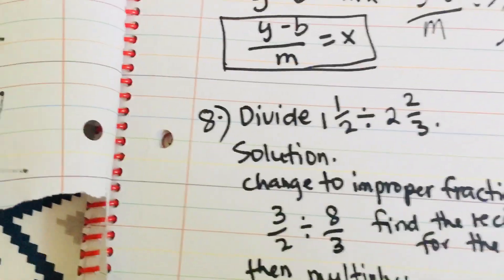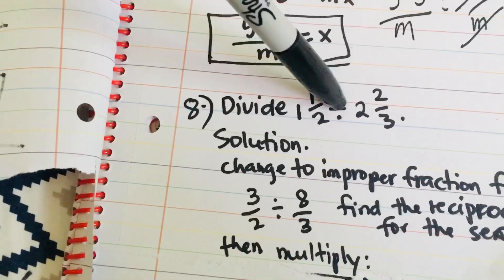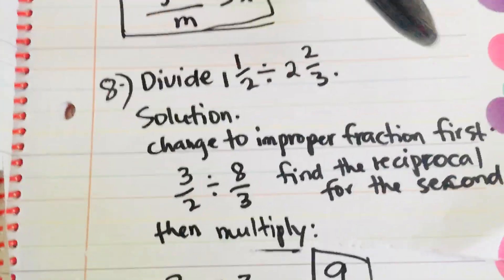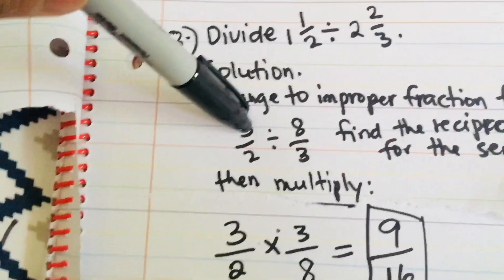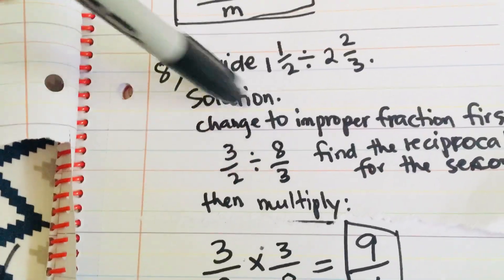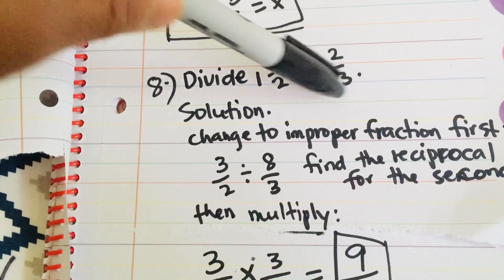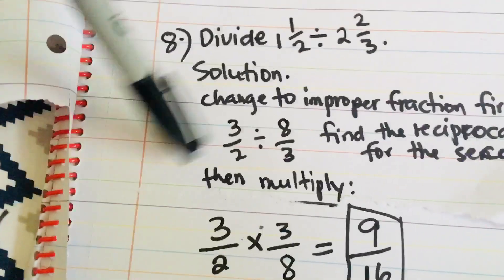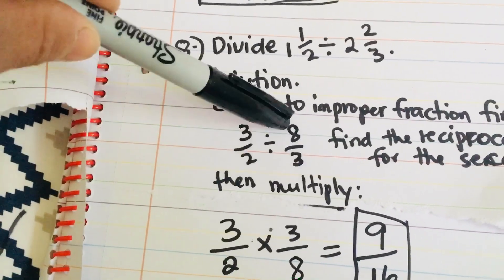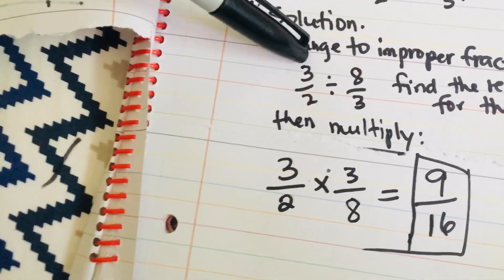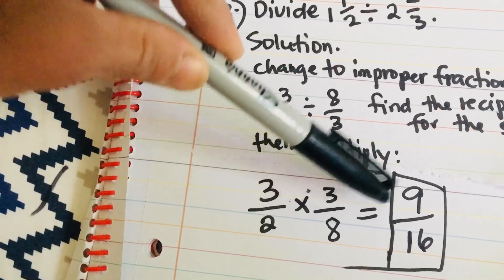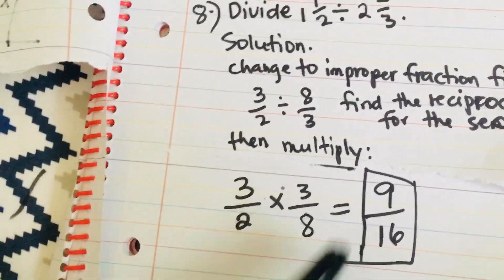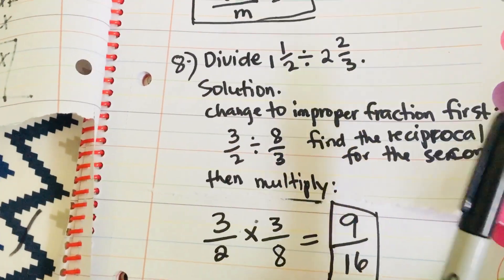Then, number 8. Divide 1 and 1 half divided by 2 and 2 thirds. First, change to improper fraction if it's in the mixed form. So, we have here 3 halves divided by 8 over 3. 1 and 1 half is equal to 3 halves and 2 and 2 thirds is equal to 8 over 3. Then, find the reciprocal for the second term. So, the reciprocal for 8 over 3 is 3 over 8. So, 3 halves times 3 over 8 is equal to 3 times 3 is 9 and 2 times 8 is 16. That's the lowest term that you can go. You cannot reduce it anymore.